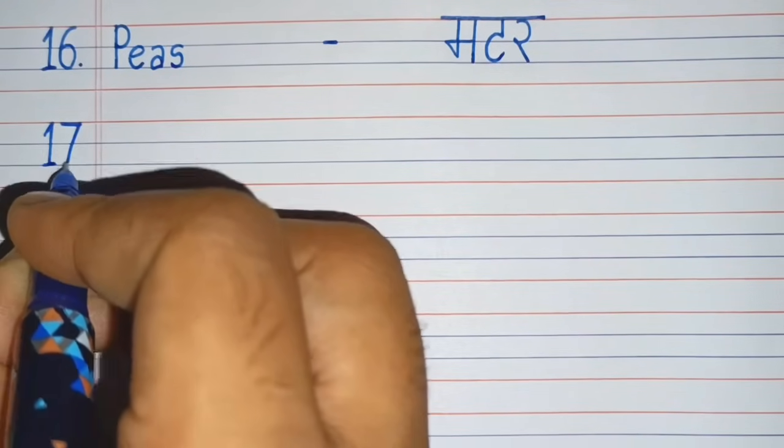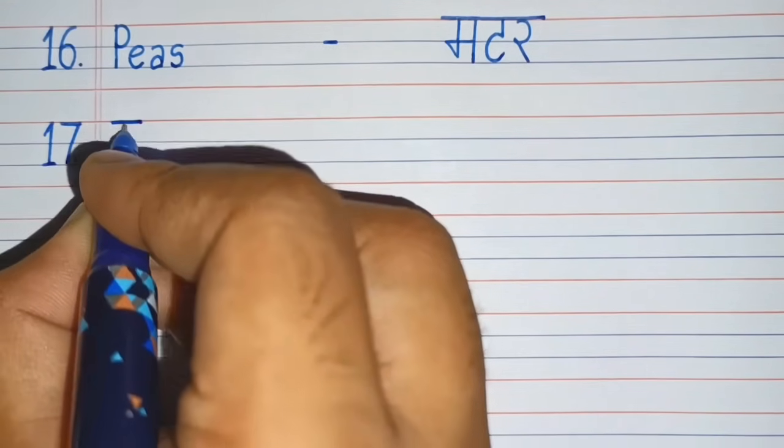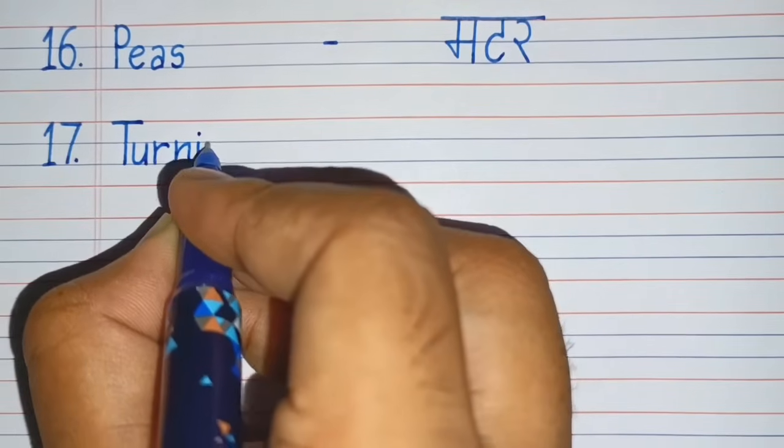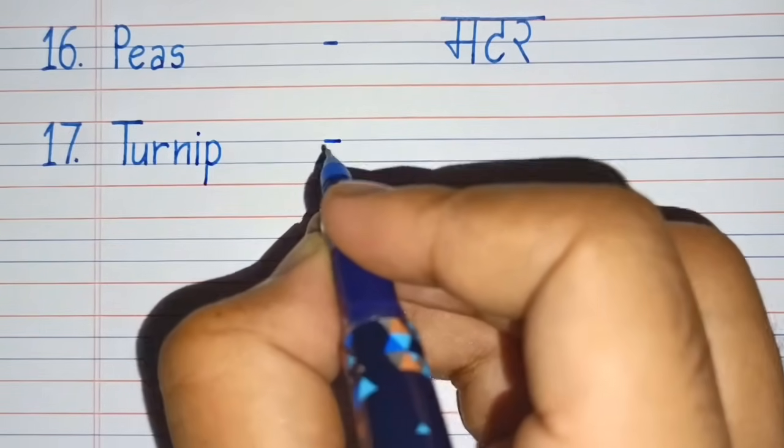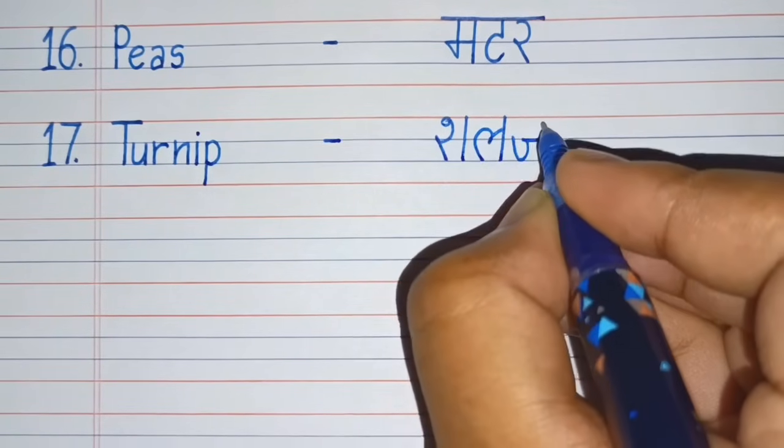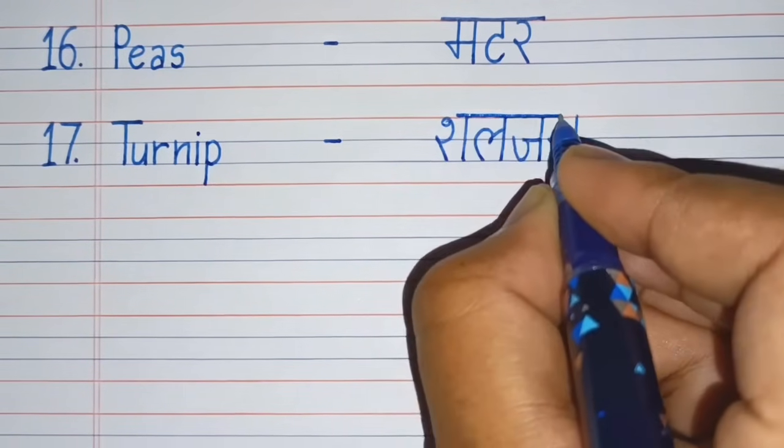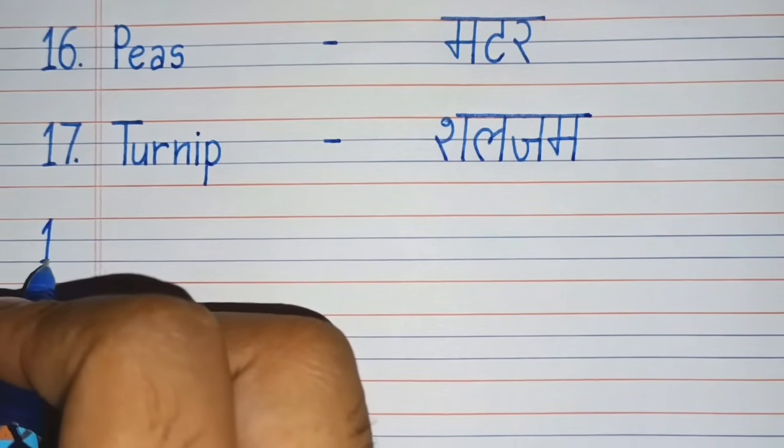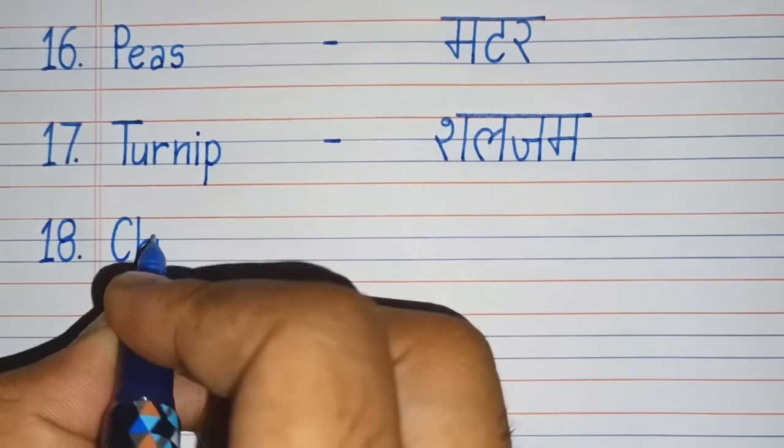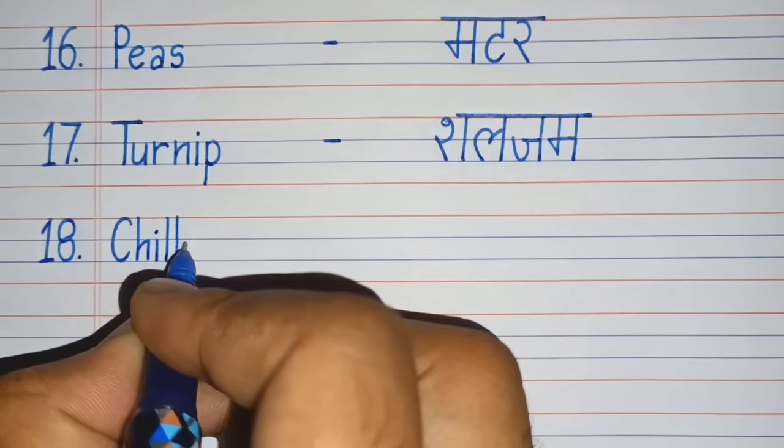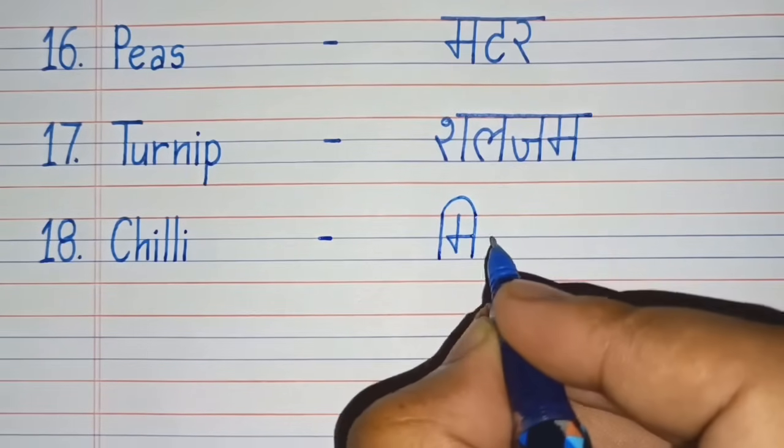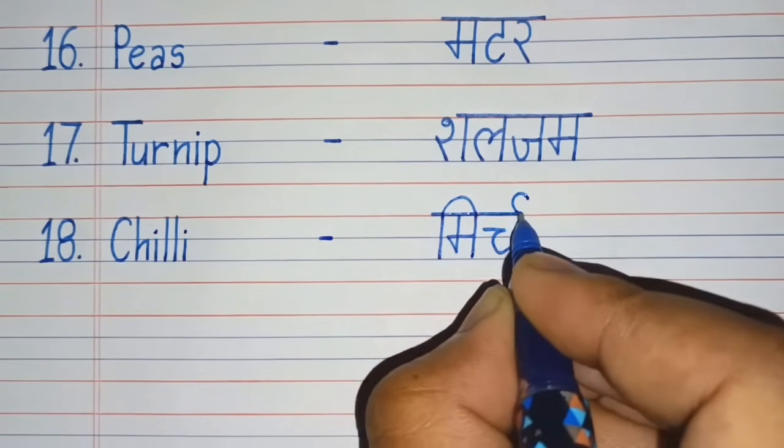Seventeenth number. T-U-R-N-I-P, Turnip. Turnip means Shalgam. Eighteenth number. C-H-I-L-L-I, Chili. Chili means Mirch.